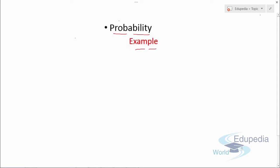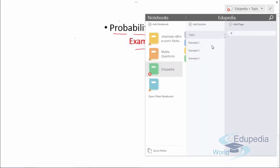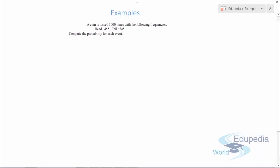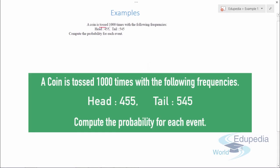Let's get started with example number one. The example says that a coin is tossed 10,000 times with the following frequencies: head comes out 455 times and tail comes out 545 times. We need to compute the probability for each event.